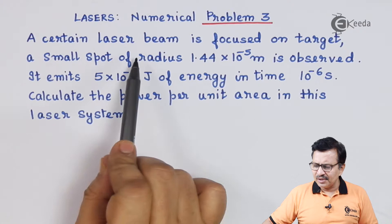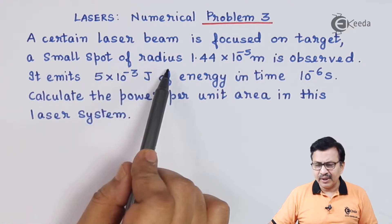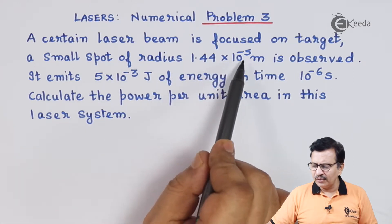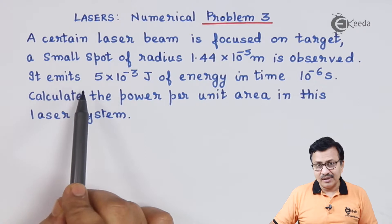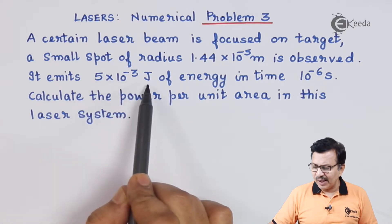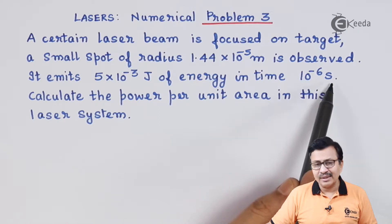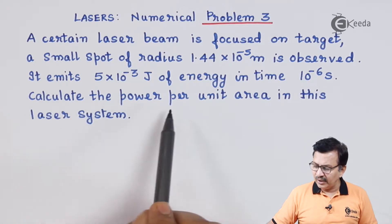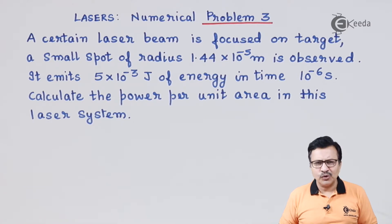A certain laser beam is focused on target and a small spot of radius 1.44 × 10⁻⁵ meters is observed. It emits 5 × 10⁻³ Joules of energy in time 10⁻⁶ seconds. Calculate the power per unit area in this laser system. So we are supposed to calculate the power per unit area, which is nothing but the intensity.